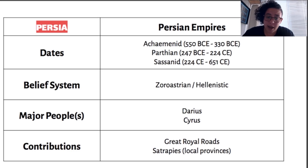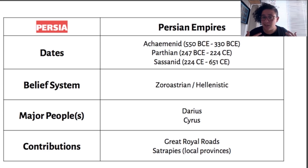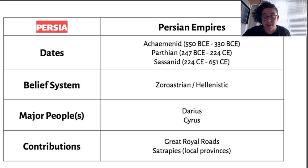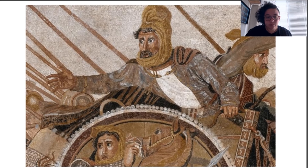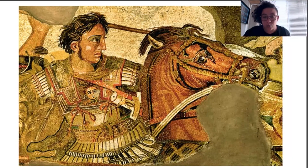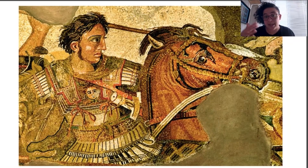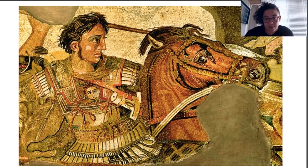The satraps were kind of their local provinces — similar to how we have states in the United States, each satrap had local government and some power. There's also artwork from that era, including Alexander the Great, who is Greek and the one who conquers Persia, though he's associated with Persia because they're around the same time period.